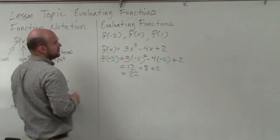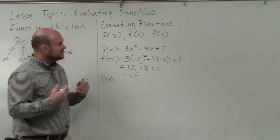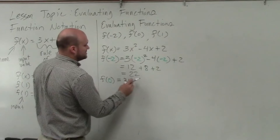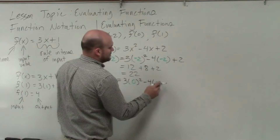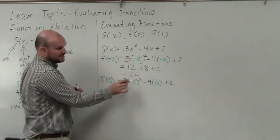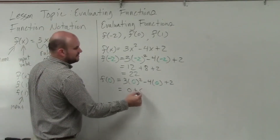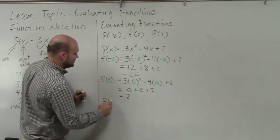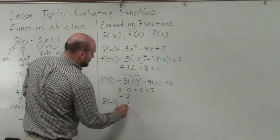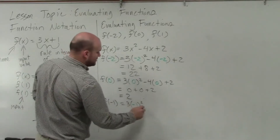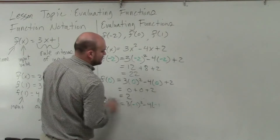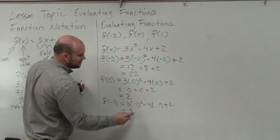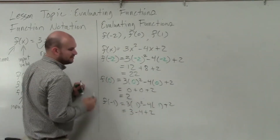To do f of 0, we apply the same technique: 3 times 0 squared minus 4 times 0 plus 2. Well, 0 squared is 0, 0 times 3 is 0, negative 4 times 0 is 0, then plus 2. So f of 0 equals 2. And for the last one, f of negative 1: 3 times negative 1 squared minus 4 times negative 1 plus 2. Negative 1 squared is positive 1, 1 times 3 is 3, negative 4 times 1 is negative 4, then plus 2. So that equals positive 1.